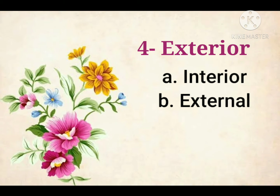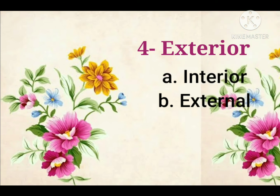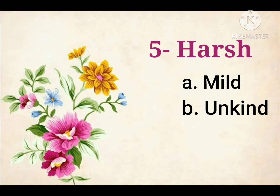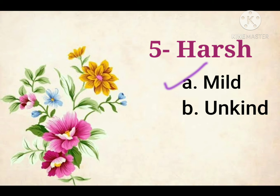Fourth is Exterior. Exterior means something relating to the outside of something. So the opposite will be Interior. Fifth is Harsh. Harsh means unpleasantly rough. So the opposite will be Mild.